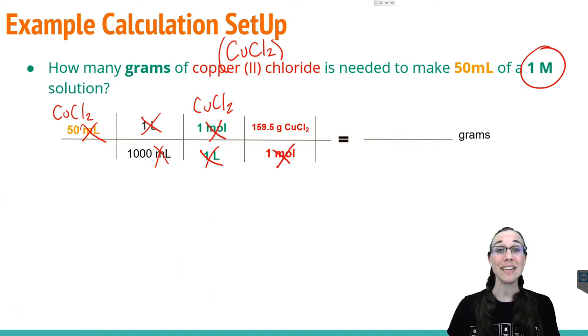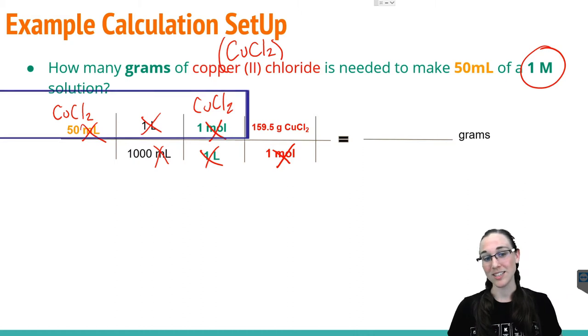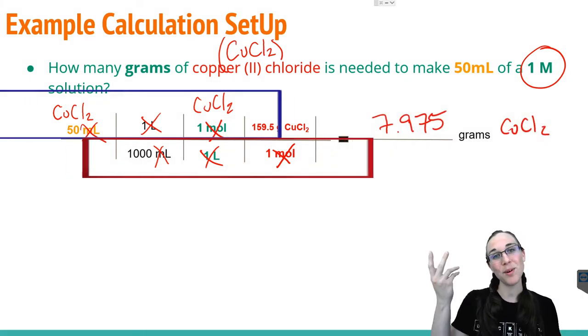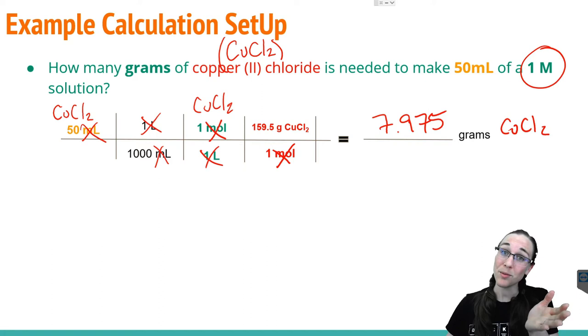The only step that's left to do is to plug into your calculator. Multiply all the values across the top, multiply the values across the bottom, and divide the two for your final answer in grams, which happens to be 7.975 grams of CuCl2.